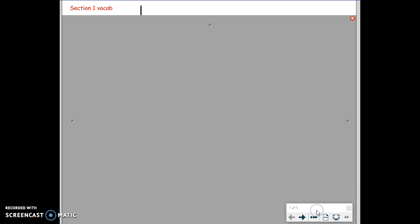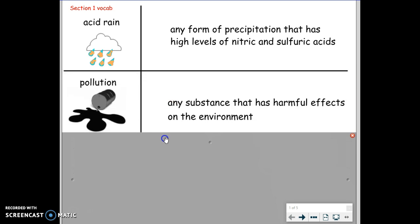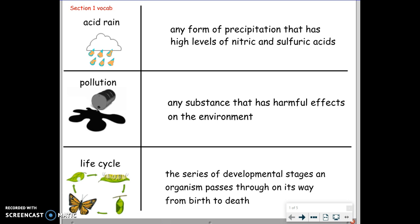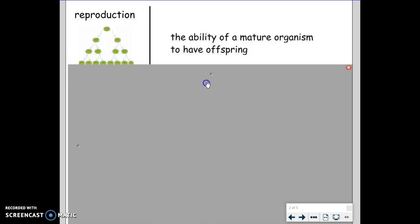You should already have the first four: Acid Rain, Pollution, Life Cycle, and Reproduction. If for any reason you don't have these four cards, you can always rewind this video and make the ones that you are missing.